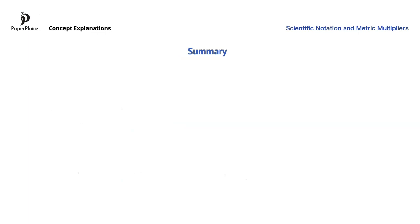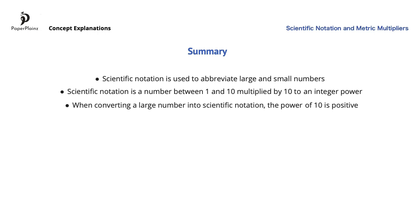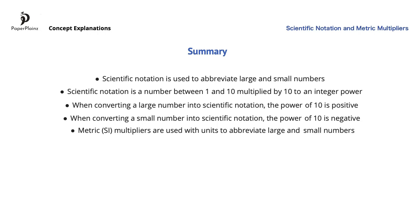Let's summarize this video. We learned that scientific notation is used to abbreviate large and small numbers, and that scientific notation is a number between 1 and 10 multiplied by 10 to an integer or whole number power. When converting a large number into scientific notation, the power of 10 is positive, and when converting a small number, the power of 10 is negative. We also learned that metric multipliers are used with units to abbreviate large and small numbers, and there is no need to memorize them because they are found on page 5 of the data booklet.